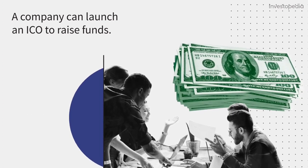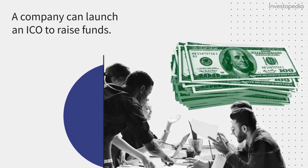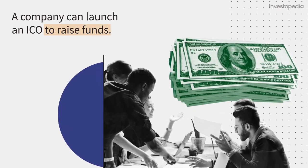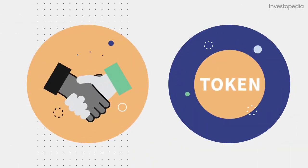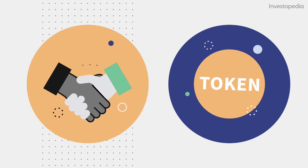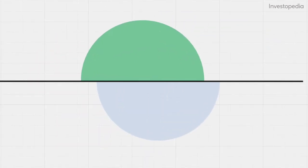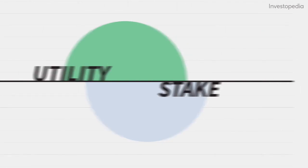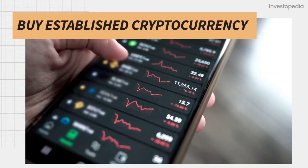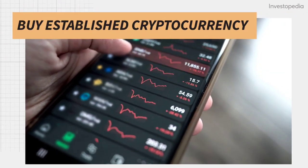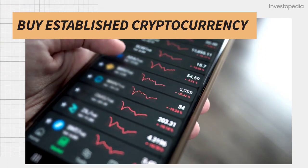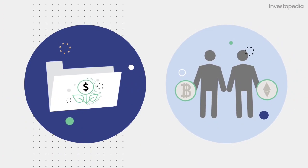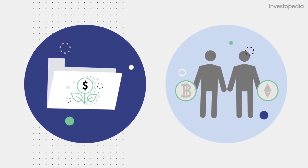A company wanting to raise money to create a new coin or app can launch an ICO to raise funds. Interested investors can buy in to receive a new cryptocurrency token. This token might have a utility or represent a stake in the project. To participate, you first need to purchase a more established cryptocurrency to use for the ICO transaction. You also need a basic understanding of cryptocurrency wallets and exchanges.